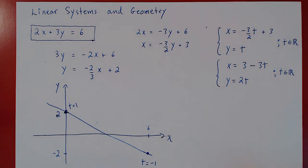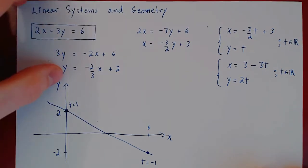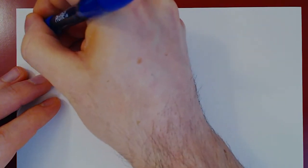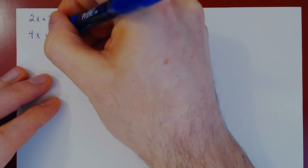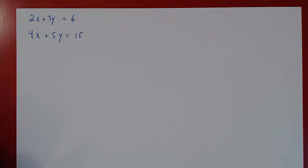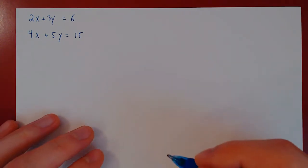Now let's see what happens when we solve two linear equations simultaneously — a linear system of two equations in two variables. We'll keep our original equation and add a second equation. The system is: 2x plus 3y equals 6, and 4x plus 5y equals 15. Let's first solve this linear system algebraically, then ask what the solution means geometrically.